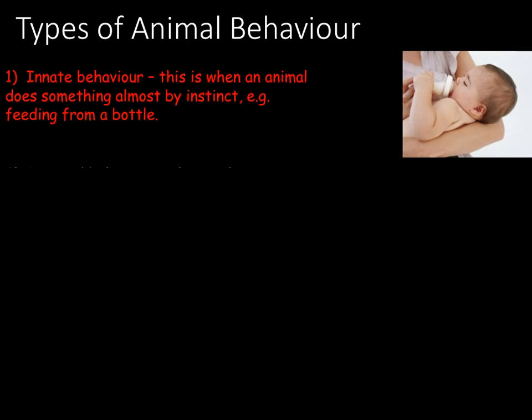Inherited behaviour is known as innate behaviour. This is a type of behaviour where you respond in the right way to a stimulus straight away, even if you have not done this previously. For example, a baby feeding from a bottle. We also have innate behaviour such as reflex actions, which include reflex arcs such as moving your hand away from a hot flame, as well as more simple responses including sneezing, salivation and blinking.